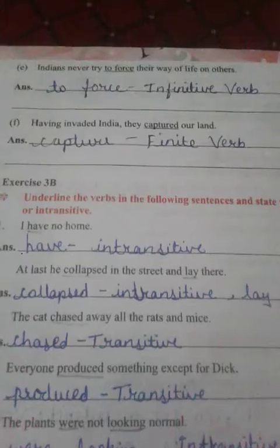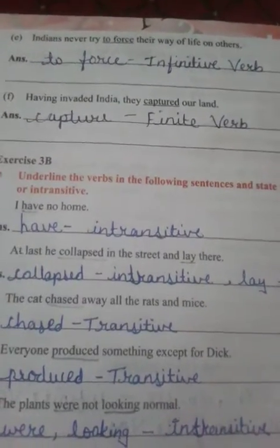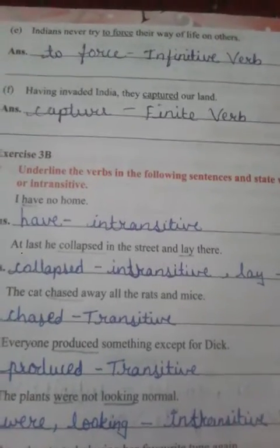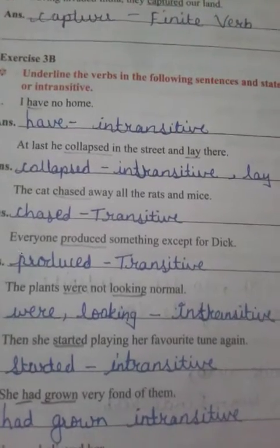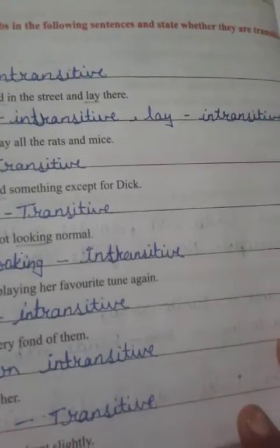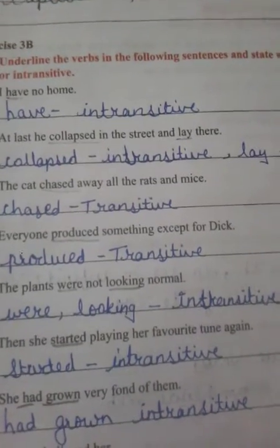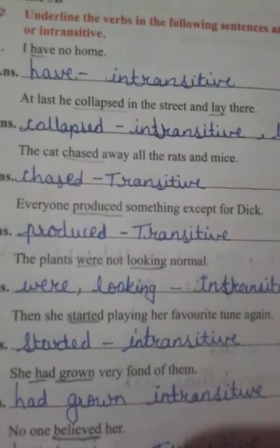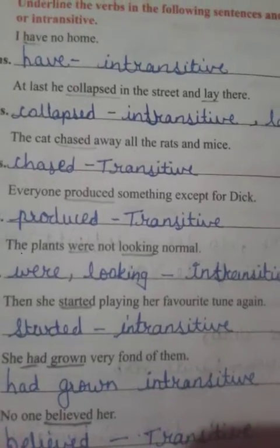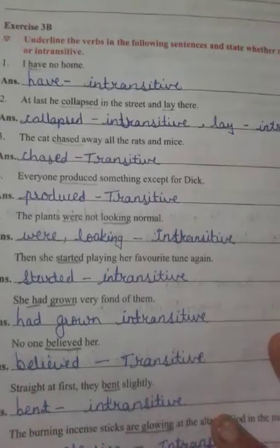Exercise 3B: Underline the verbs in the following sentences and state whether they are transitive or intransitive. 'I have no home' — 'have' is intransitive. 'At last he collapsed in the street and lay there' — 'collapsed' and 'lay' are both intransitive. 'The cat chased away all the rats and mice' — 'chased' is transitive. 'Everyone produced something' — 'produced' is transitive. 'The plants were not looking normal' — 'were looking' is intransitive. 'Then she started playing her favorite tune again' — 'started' is intransitive. 'She had grown very fond of them' — 'had grown' is intransitive.